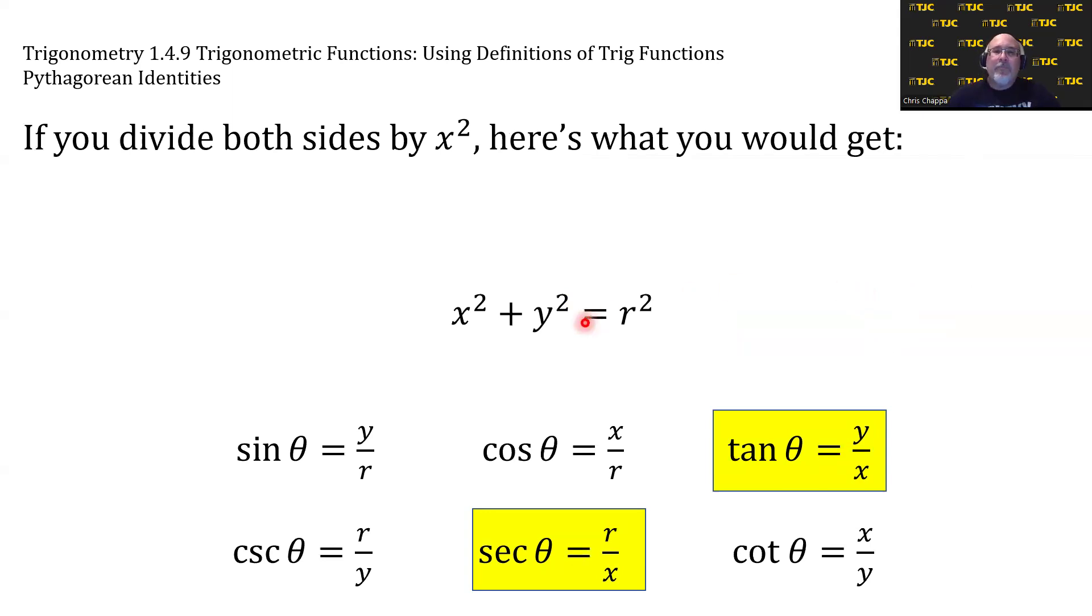Now, let's just talk this one out. The first term, if we divide it by x², will become one. The second term will become y²/x², but y/x is the definition of tangent of theta. So the second term will become tangent squared.